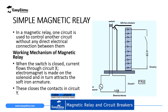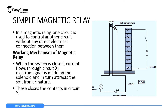The main parts of a simple magnetic relay include: a contact, a soft iron armature, a soft iron core inside a solenoid, circuit X (the first circuit), circuit Y (the second circuit), an electrical device on circuit Y, and an alternating current source. The alternating current source belongs to circuit Y, and its switch is connected at the top where we have our contact.